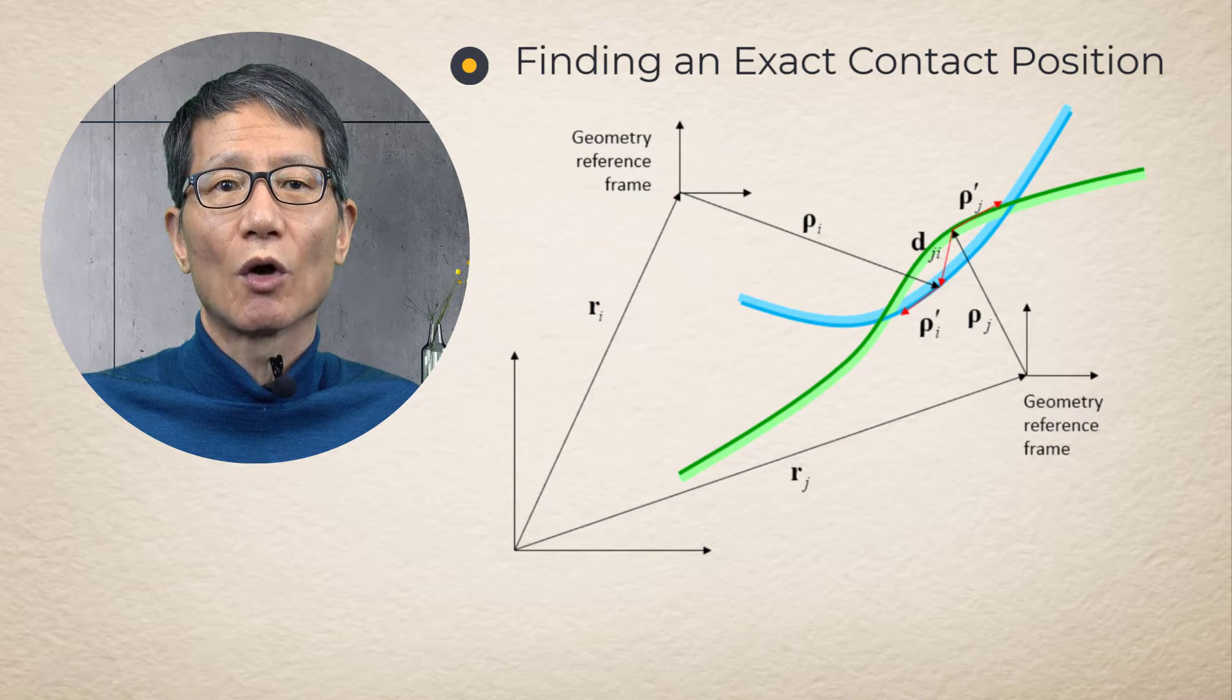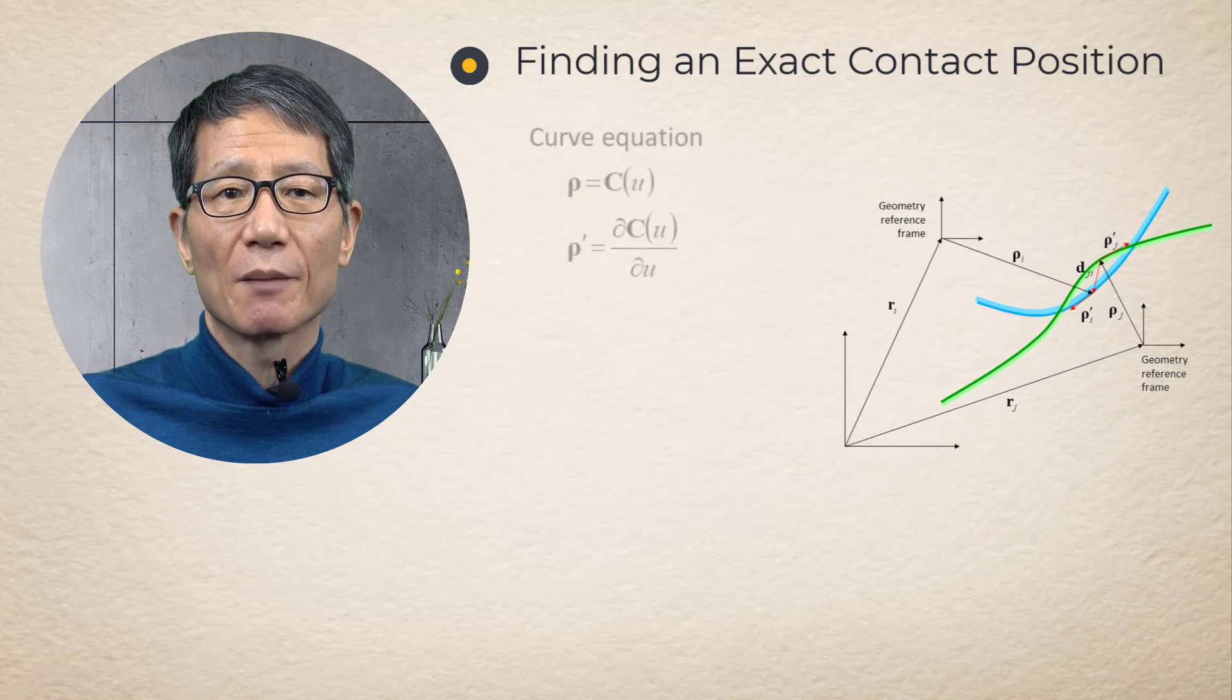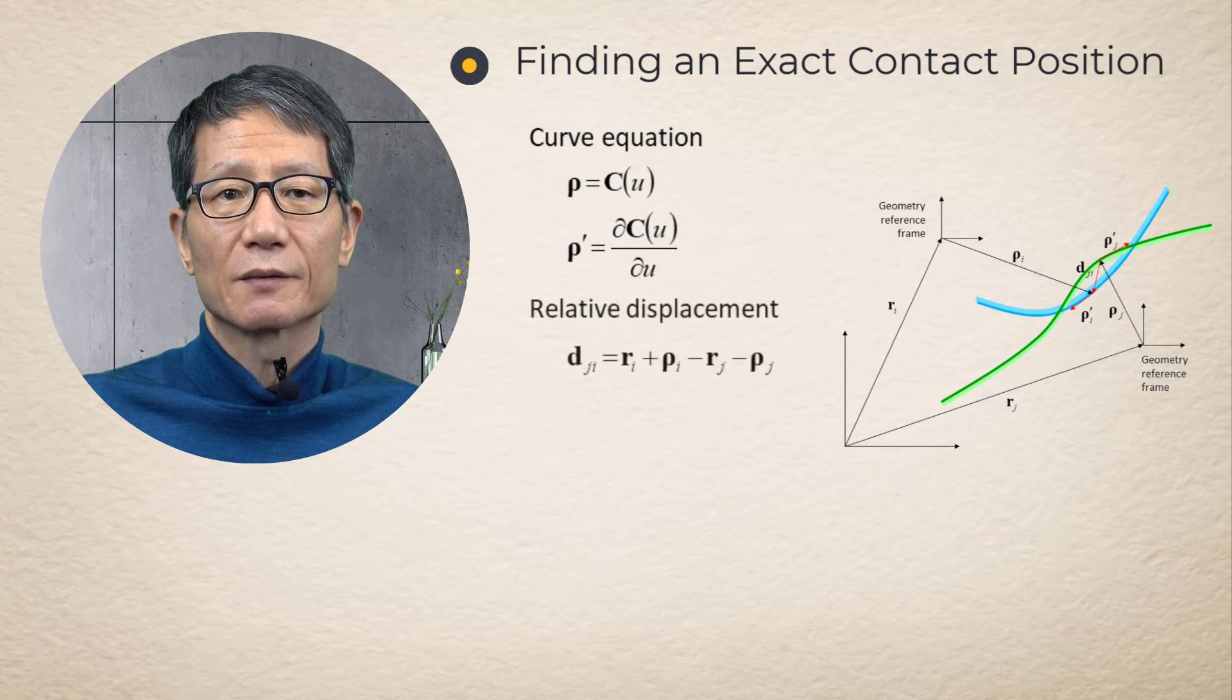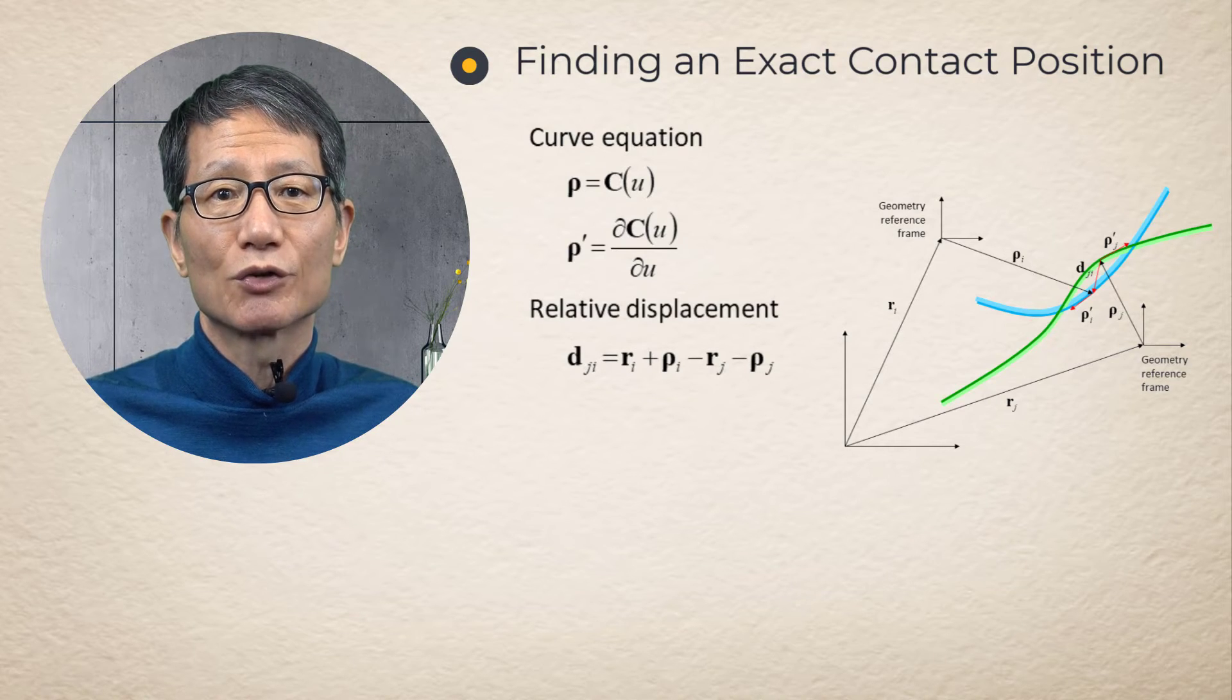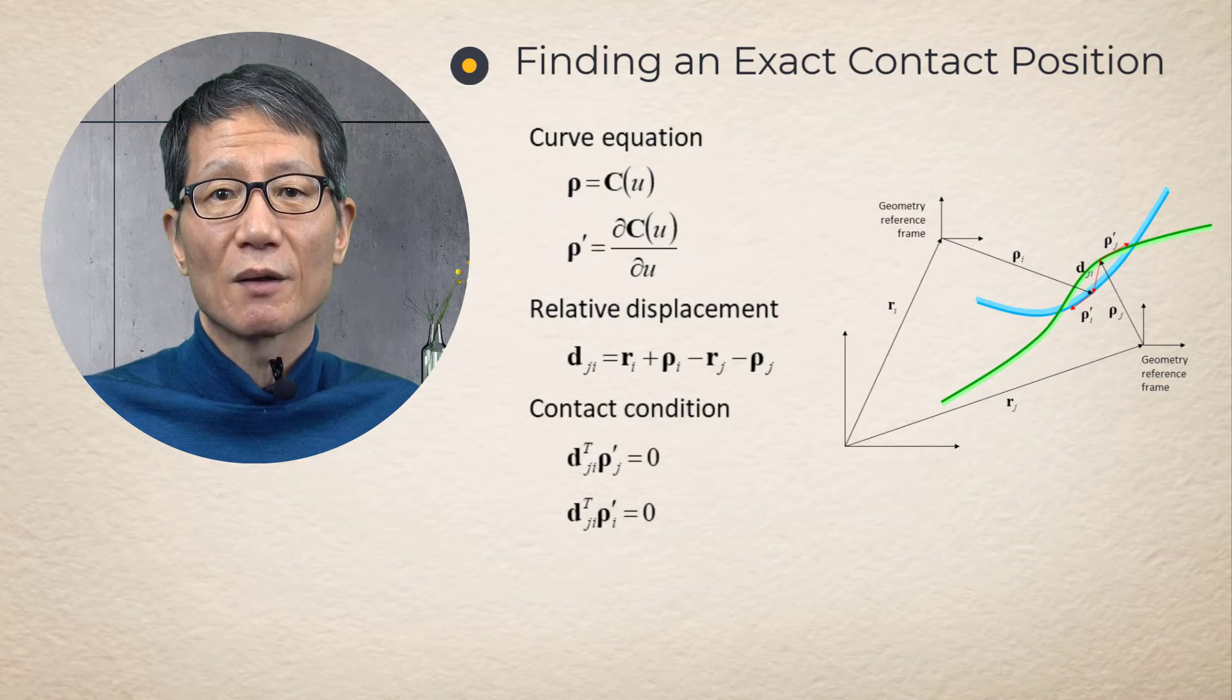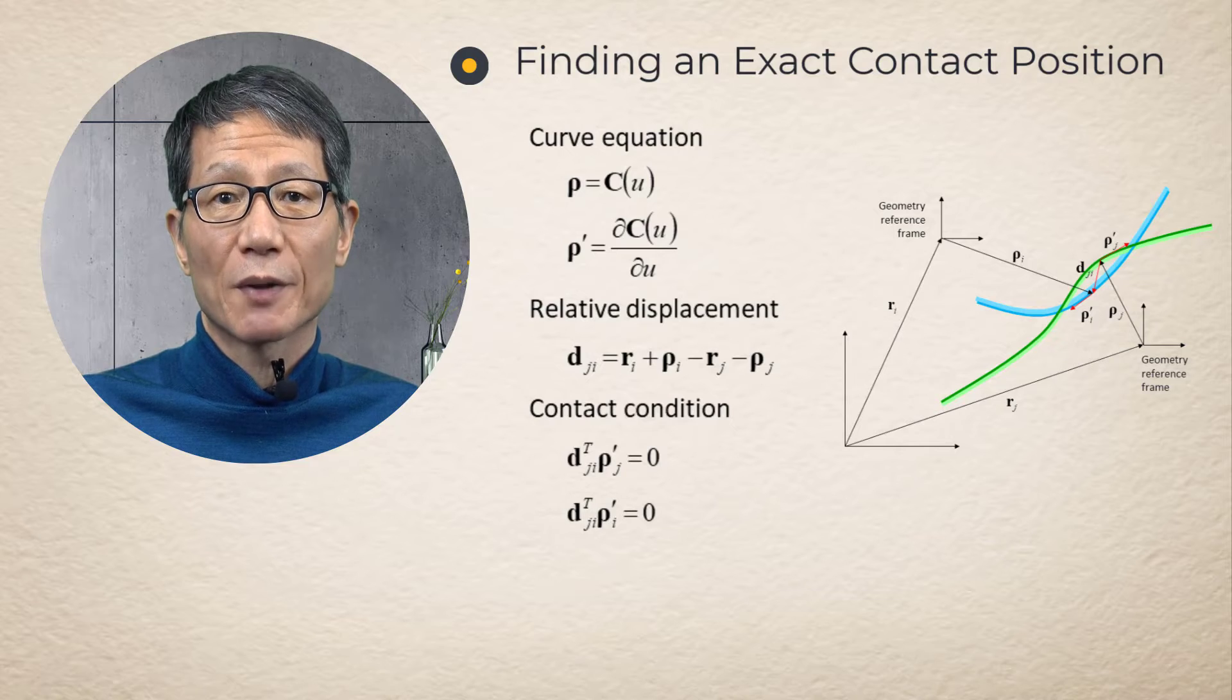When a node-to-surface contact option of ANSYS Motion is used, two contact conditions can be defined. The contact condition equations contain two unknown surface parameters. The surface parameters can be found by solving the two contact condition equations. Since the contact condition equations comprise two nonlinear equations, Newton's method is used to find the surface parameters.